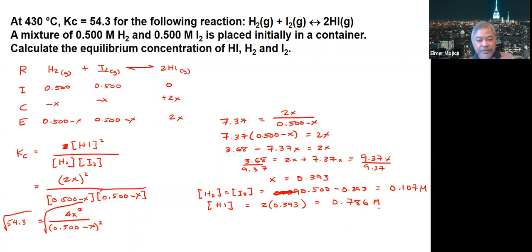To check if this is correct, you look at the expression: 0.786 squared over 0.107 squared gives around 53.96, which is close to 54.3.